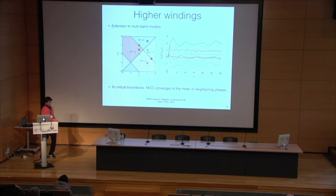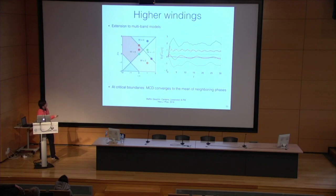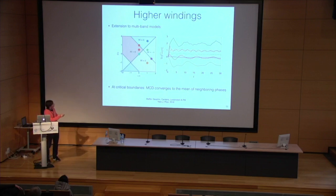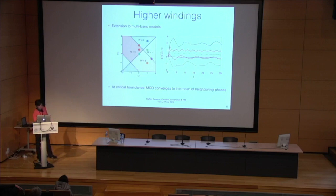This observable works also for higher windings. For example, we took a model that supports winding two or minus one, and the observable converges to the expected value. Again, at the boundary between two topological phases, the observable converges to the mean of the invariants in the two phases.